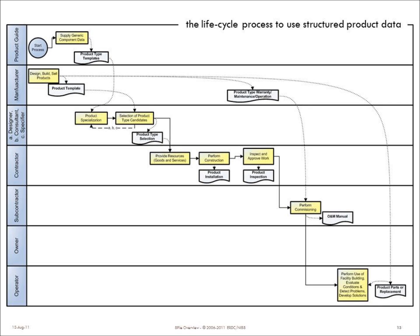This slide gives an example of how the information flows during the course of a building project. It begins with the definition of the templates at the product guide and ends with the operator selecting replacement equipment during the course of the project. Let's push on this a little bit and show a few specific examples of how the lifecycle information related to structured product data is used during design and construction and operation.